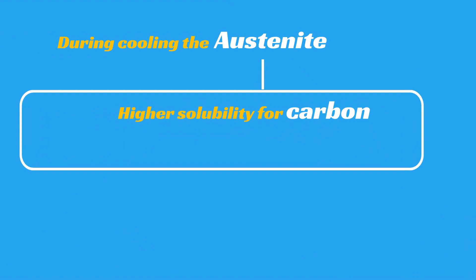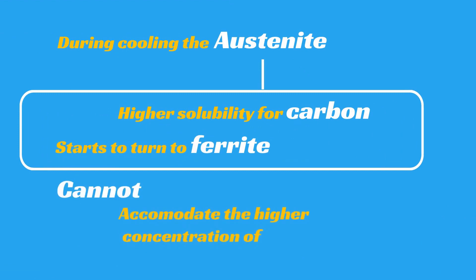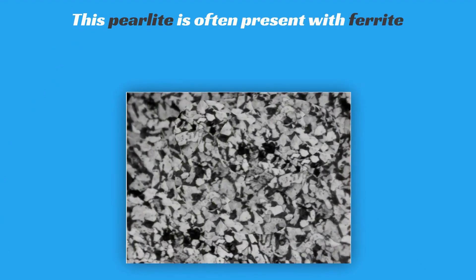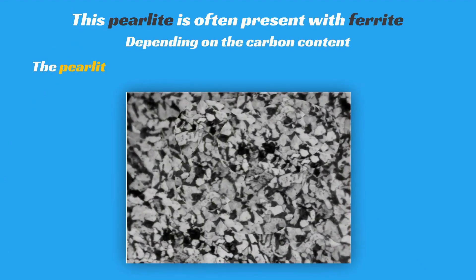During cooling, the austenite, which has a higher solubility for carbon, starts to turn to ferrite. But because this ferrite cannot accommodate the higher concentration of carbon, the structure develops in alternate laths of cementite and ferrite. This pearlite is often present with ferrite, and depending on the carbon content, the pearlite and ferrite will be present in differing ratios.